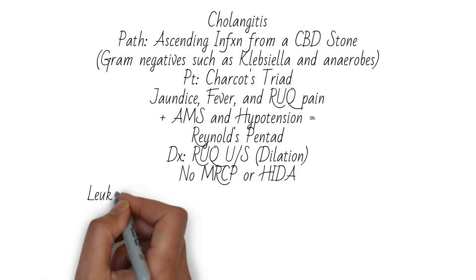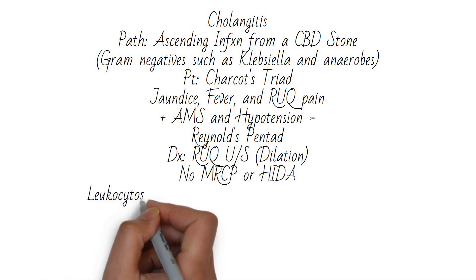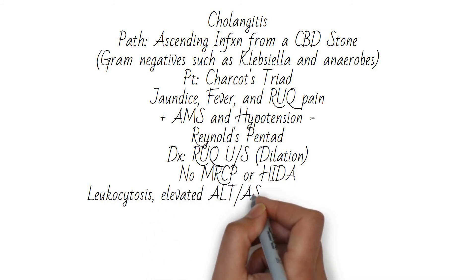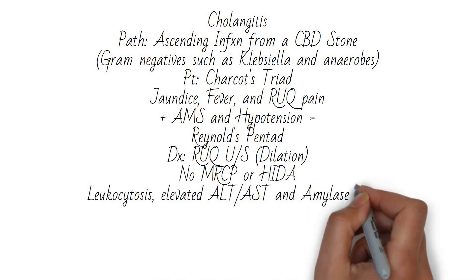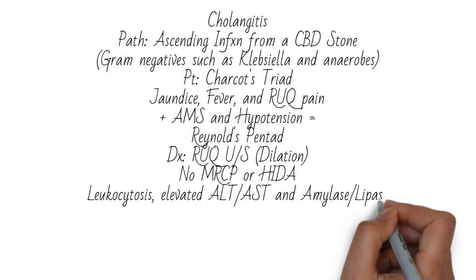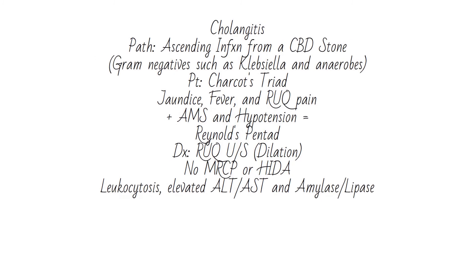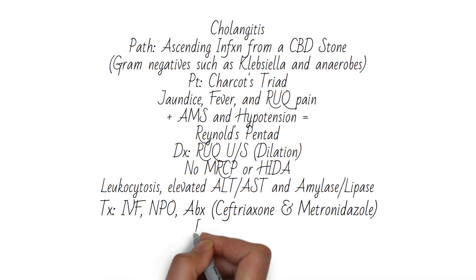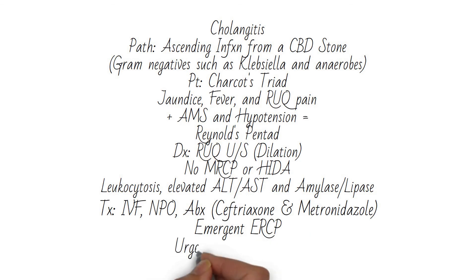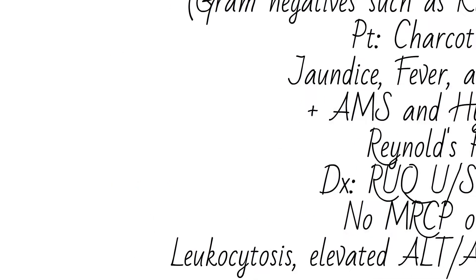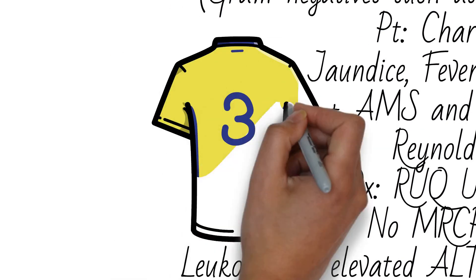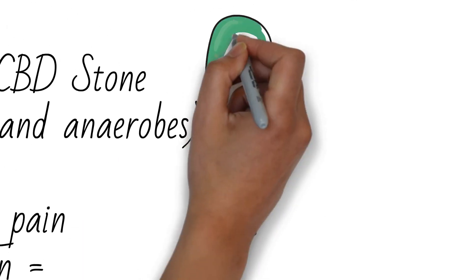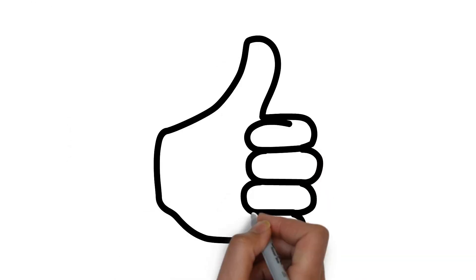Right upper quadrant ultrasound will show dilation of the ducts. You will not have time for MRCP or a HIDA scan. Labs will show leukocytosis and elevated liver and pancreatic enzymes. You will make the patient NPO, give IV fluids, and start antibiotics. You will go to ERCP emergently, and then urgently proceed to cholecystectomy.